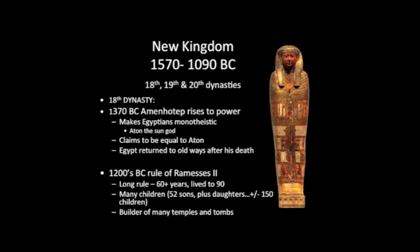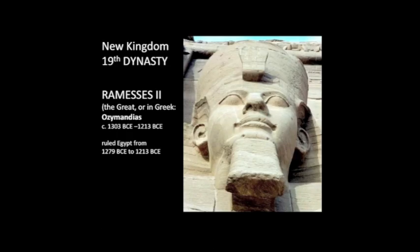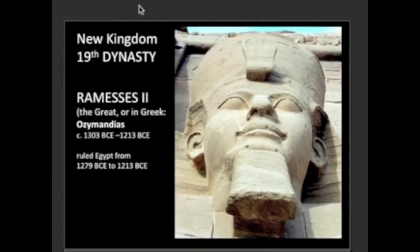Ramses was on the throne for over 60 years. Throughout that period, he was building cities, conquering territories, siring children, and particularly building temples. He's called Ramses the Great because his power and ability to transform history was so great. Nobody built as many temples as Ramses. His buildings were colossal in scale. To the Greeks, he is known as Ozymandias.